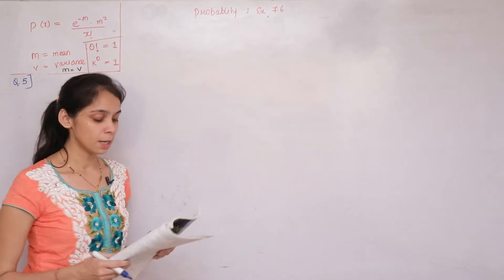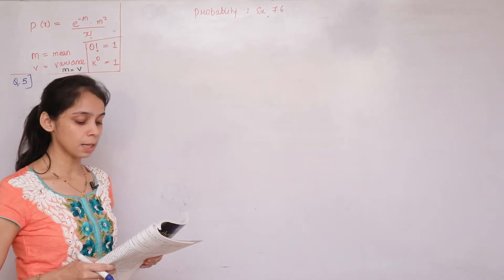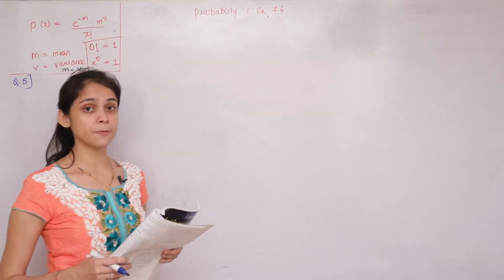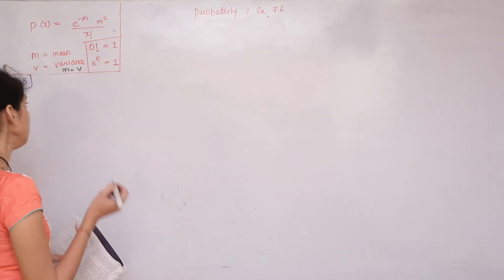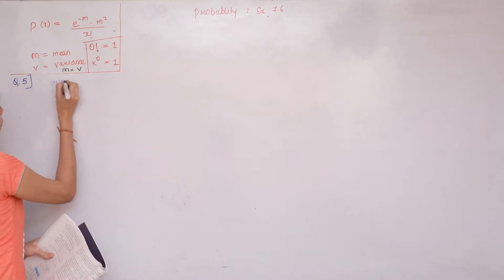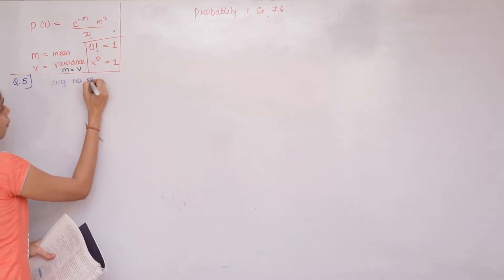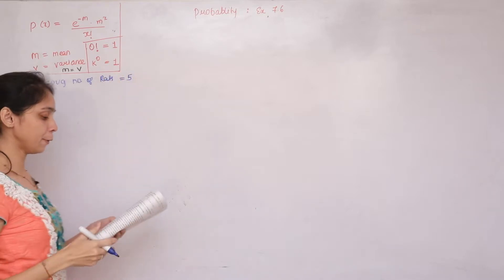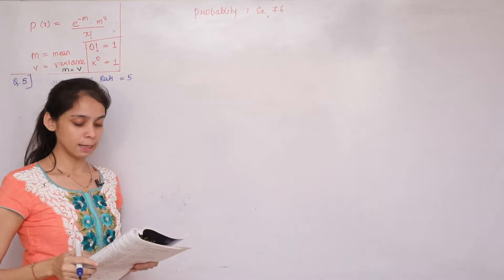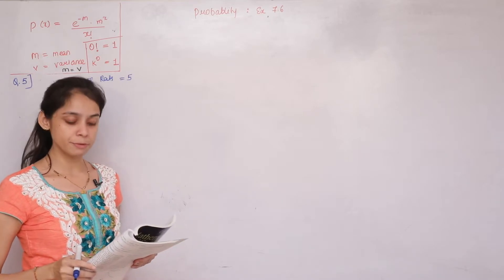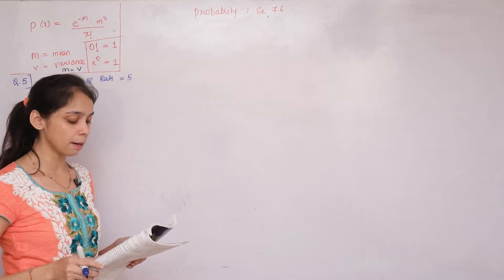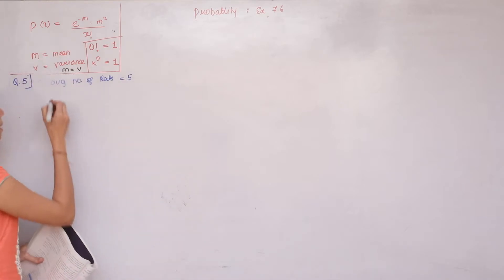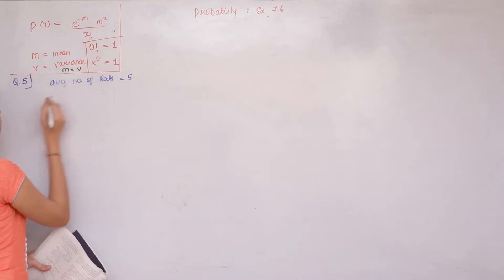Question number 5. It is known that in a certain area of a large city, the average number of reds per bungalow is 5. Average number of reds equals 5. Assuming that the number of reds follows Poisson distribution, find the probability in a randomly selected bungalow. We have to find probability when average is given as 5.